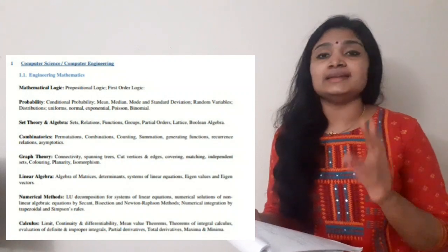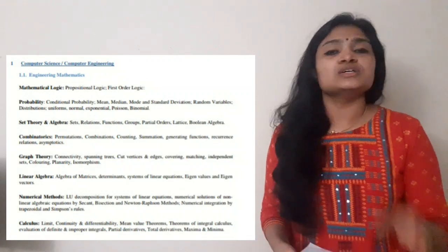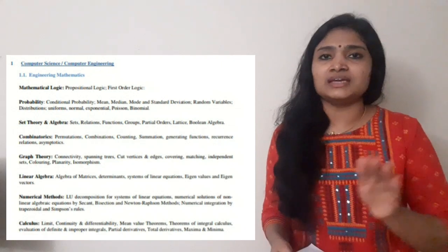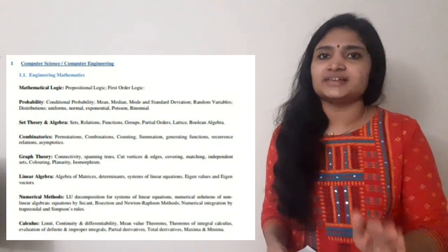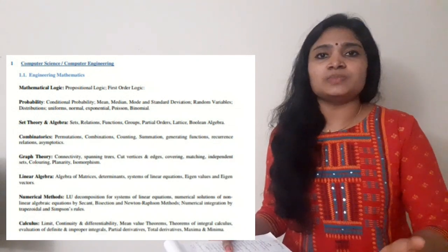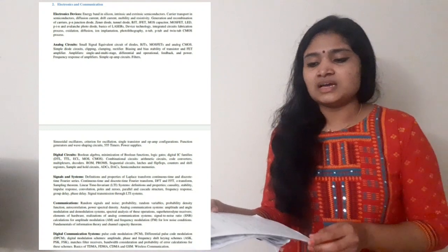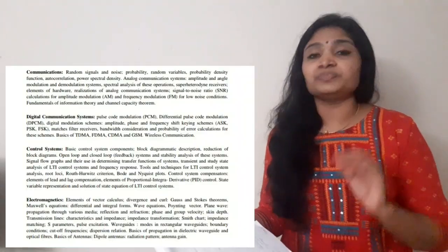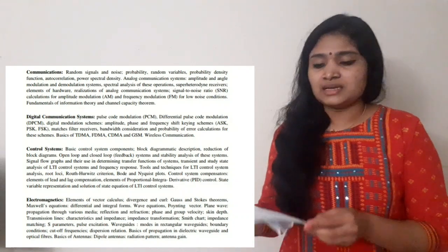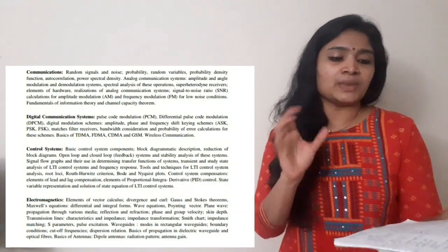For the Electronics branch, Engineering Maths is again the same: mathematical logic, probability, set theory, graph theory, permutation and combination, linear algebra, numerical methods, and calculus — common for all three branches. The Electronics branch technical subjects are: electronic devices, analog circuits, digital circuits, signals and systems, and communication (both analog and digital).